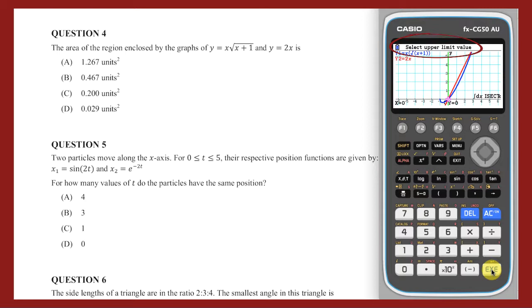Arrow right to find the next intersection point. Press Execute to select it as the upper bound. The area is displayed on the bottom of the screen, meaning that the answer is A.